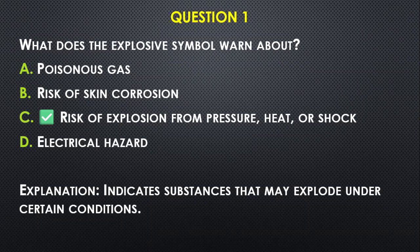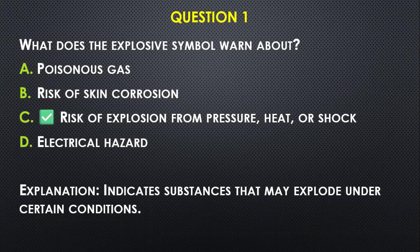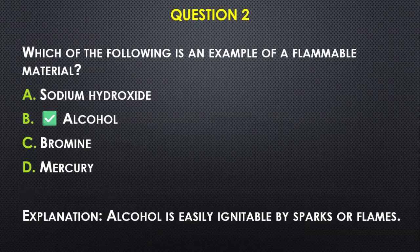Question number one: What does the explosive symbol warn about? A) poisonous gas, B) risk of skin corrosion, C) risk of explosion from pressure, heat, or shock, D) electrical hazard. Our answer is C, because it indicates substances that may explode under certain conditions.